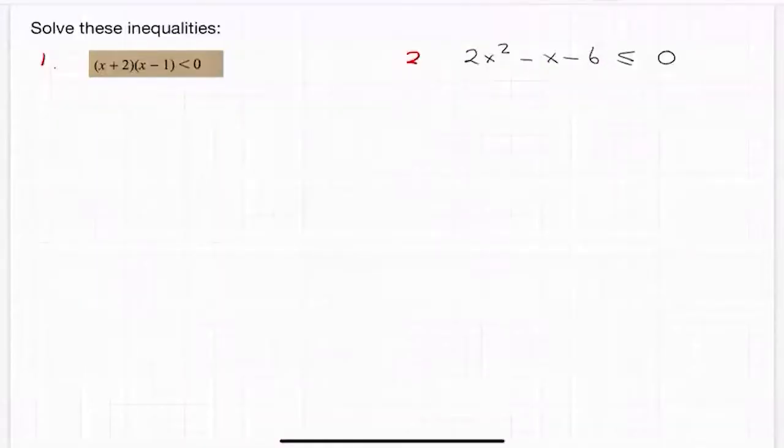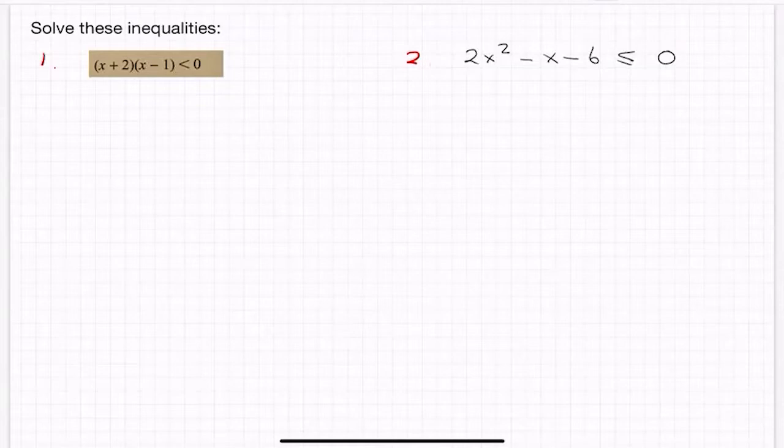A couple more inequalities. The first one there, x plus 2 in a bracket by x minus 1 in a bracket is less than zero, so it's asking you to solve these inequalities. Well, this in its previous life would have been a quadratic.